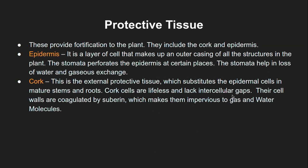Cork cells are lifeless and they lack intercellular gaps — they are very compact and lifeless because they are dead. Their walls are coated by suberin. In sclerenchyma, the cell walls were covered with lignin; in the case of cork, it is suberin — nothing fundamentally different. Suberin is a biomolecule, a plant cell wall component that gives the cell a harder texture. The cork cell becomes harder as a result, similar to how bark is.